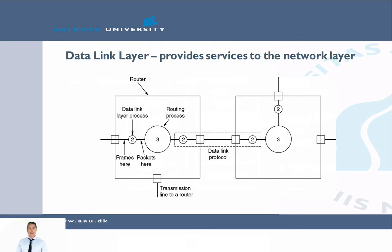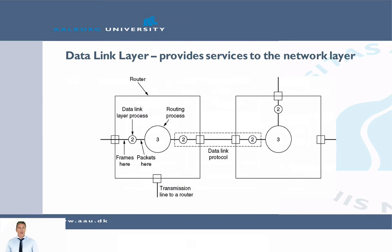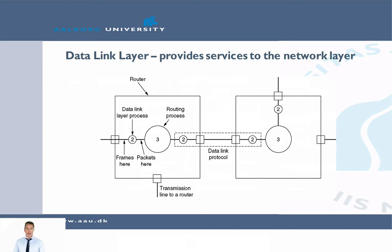The drawing here illustrates that when we are talking about the data link layer protocol, we are talking about two computers or two entities communicating directly to each other. In this case, we have drawn two routers communicating on layer 3, the network layer. If we have multiple of them, then between each pair of routers, we establish one connection based on layer 2, so they are directly connected to each other.